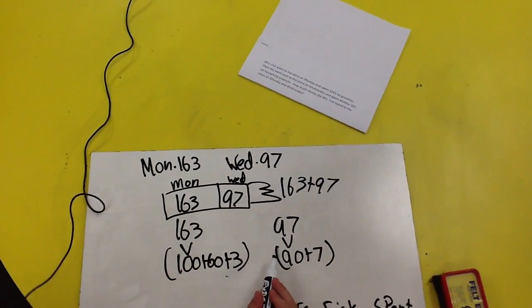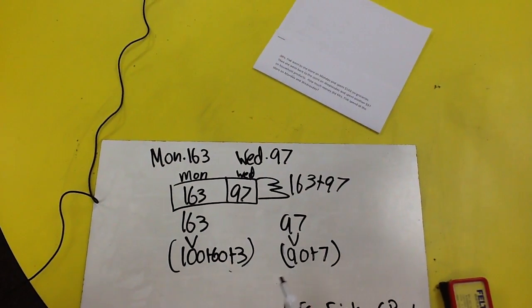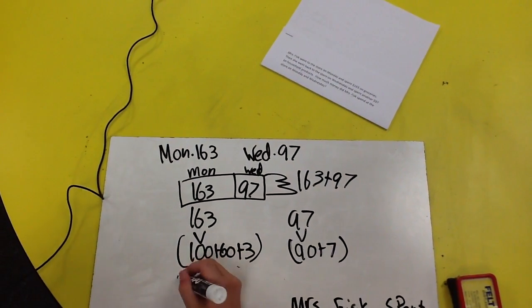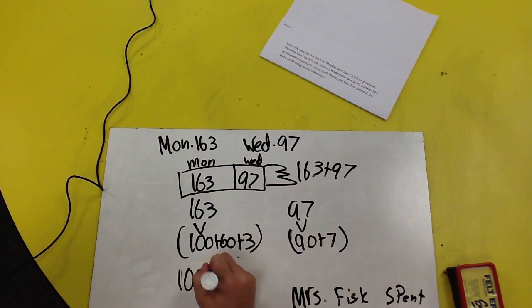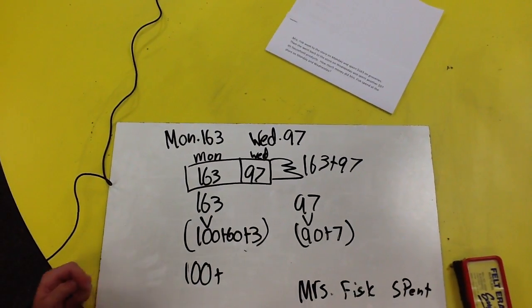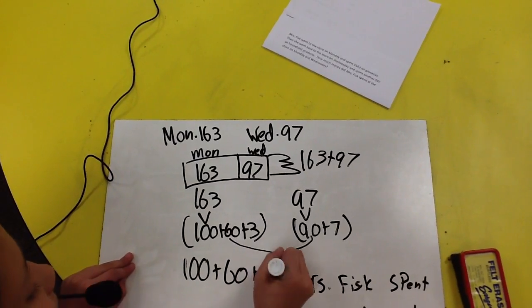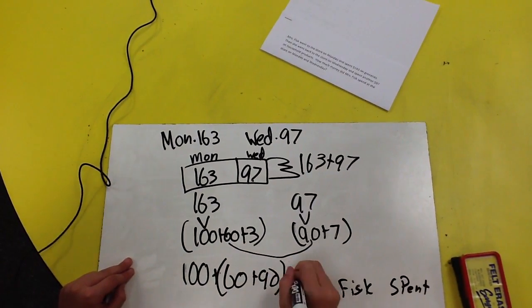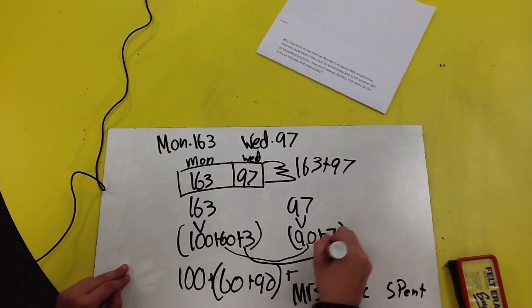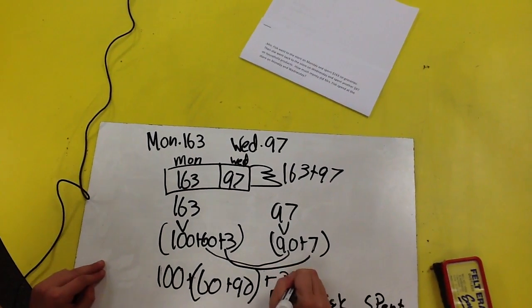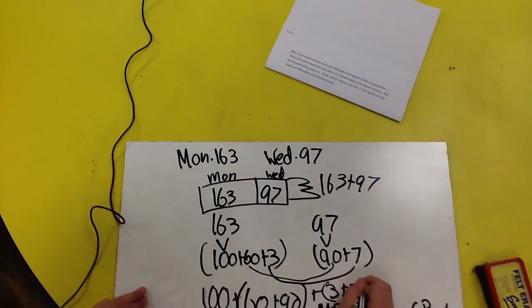I don't see any hundreds in $97. I'm just going to put that down, and I'm not going to put it in a parenthesis because it's only one. I see $60 and $90, so $60 plus $90. I'm going to put this in a parenthesis because it's two. Then I see $3 and $7, $3 plus $7.